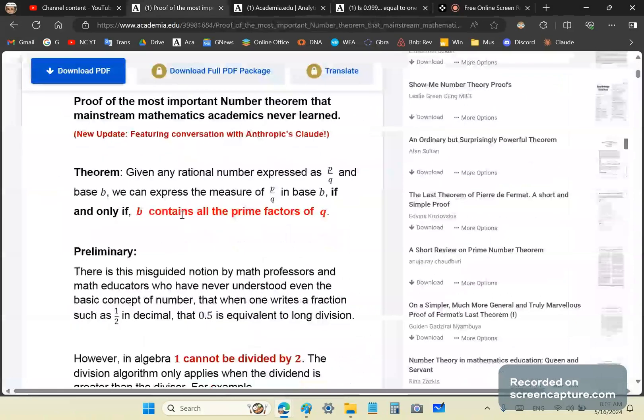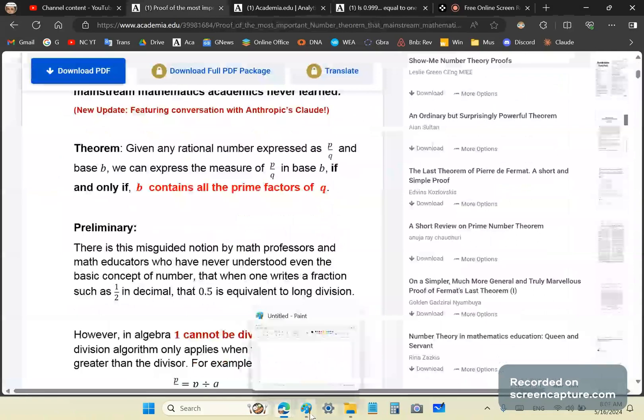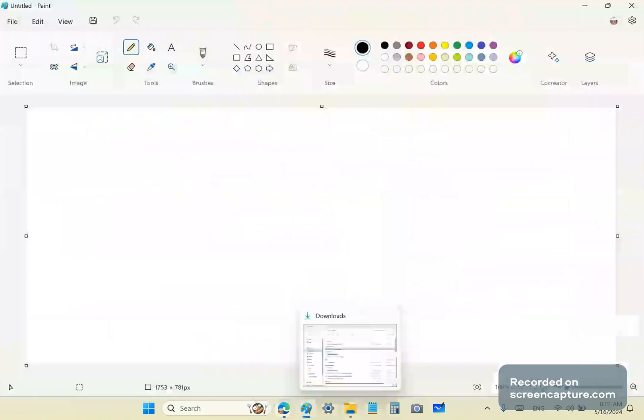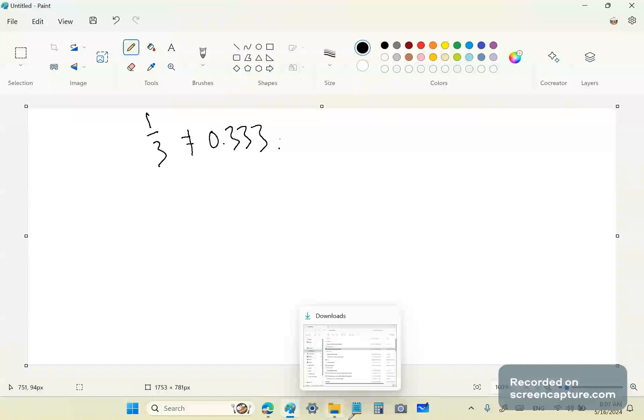Now what this is telling you here is that a number, a well-formed number such as one-third, has no representation in base 10. The common retort is that it has no finite representation, but it has an infinite one. No, that's not true because there is no such thing as an infinite representation. It's baloney.